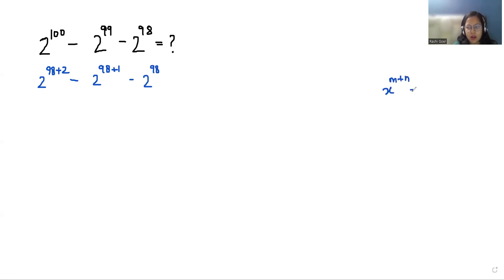x^(m+n) can be written as x^m times x^n. So we have 2^98 times 2^2 minus 2^98 times 2^1 minus 2^98.